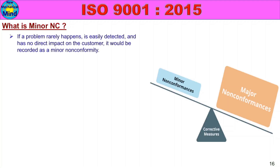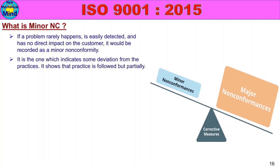If a problem rarely happens, is easily detected, and has no direct impact on the customer, it would be recorded as a minor non-conformity. A minor non-conformity indicates some deviation from practices — it shows that a practice is followed but only partially. That is why it is called a minor NC.